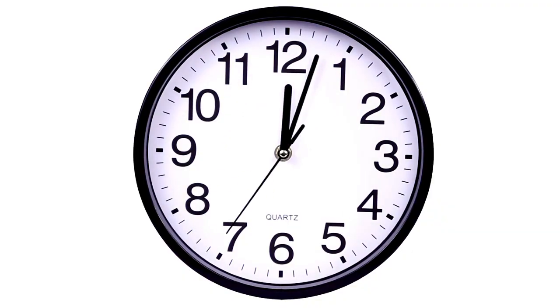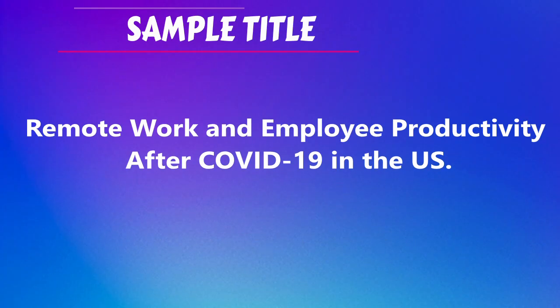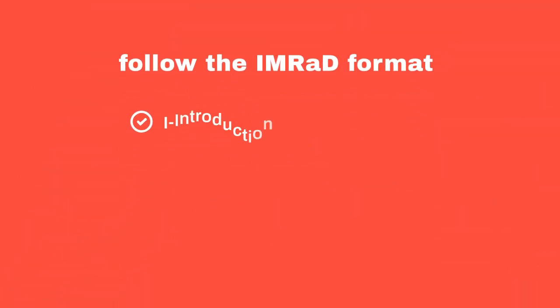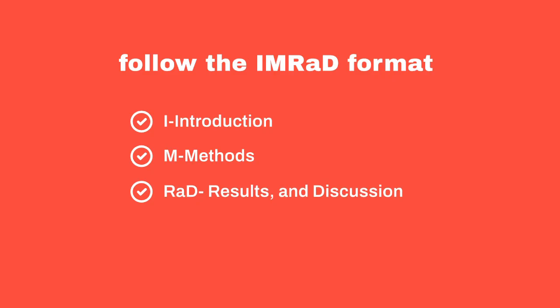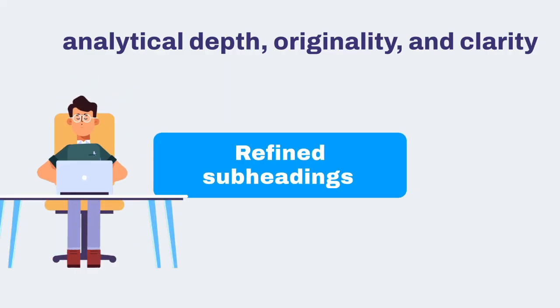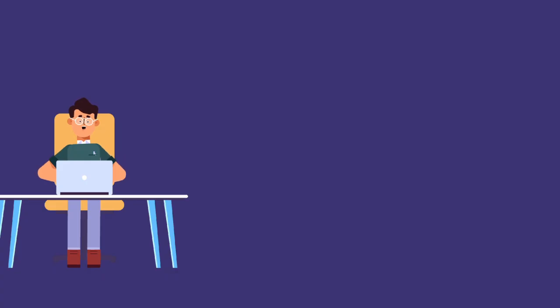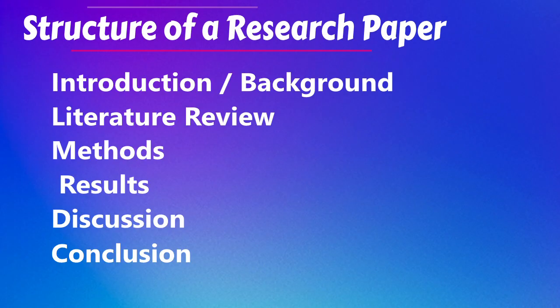Let's get started now. We will use this title as an example: Remote Work and Employee Productivity After COVID-19 in the U.S. While structures vary slightly by discipline and journal, most college research papers and Q1-ranked academic journals follow the IMRAD format — Introduction, Methods, Results, and Discussion — but with refined subheadings that demonstrate analytical depth, originality, and clarity. I suggest the following headings: Introduction/Background, Literature Review, Methods, Results, Discussion, and Conclusion.